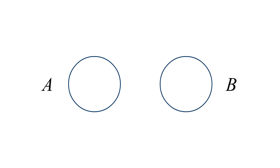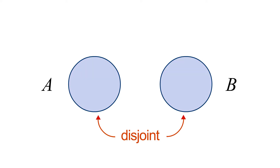Drawing the sets so that they don't overlap implies that the two sets contain completely different elements. In this case, we say that the two sets are disjoint. Disjoint sets have no elements in common.